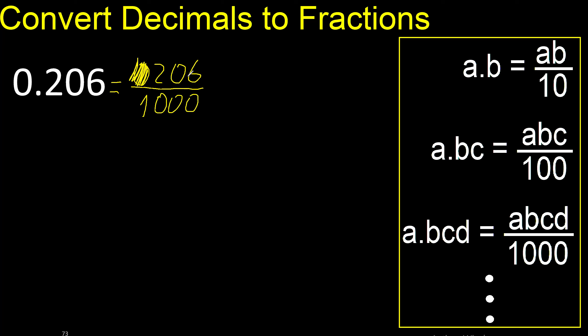1, 2, 3 — can be simplified because they can be divided by the same number. Divided by 2, divided by 2.